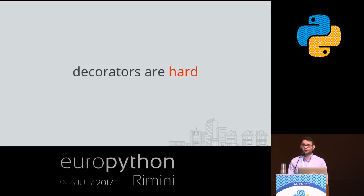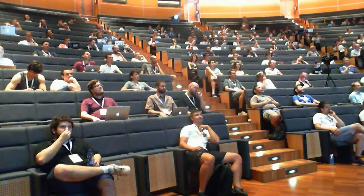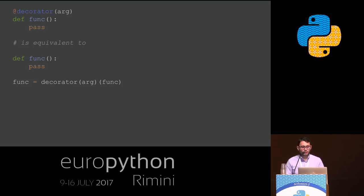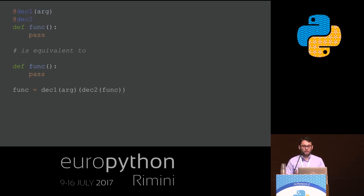That's pretty easy. In case you want to pass arguments to your decorator, the decorator function is called with the arguments first, and then the result is used as a decorator. In case you have more than one decorator, the one closest to the function gets executed first, and the result gets passed to the upper-level decorator. So I changed my stance: decorators are pretty easy to use, but maybe are just hard to write. Well, that's not entirely true either.